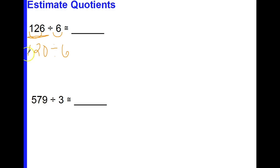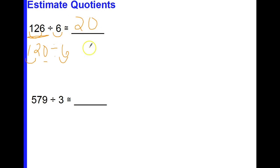Now I continue to look at my basic facts: 12 divided by 6 is 2, and I cannot forget that I have this 0 to account for — I'm going to add that to my approximate quotient. So 126 divided by 6 is approximately equal to 20. Now let's look at the next example: 579 divided by 3.